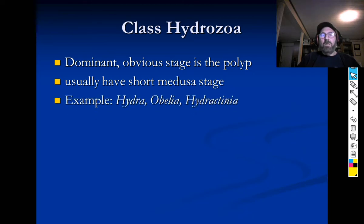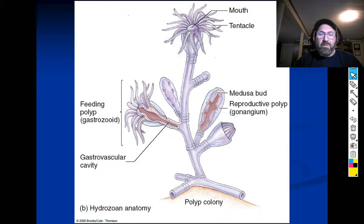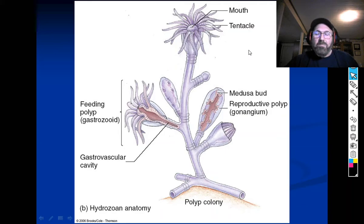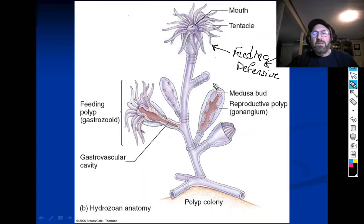What most of us think of as hydrozoans — Hydra and Obelia — are the polyp stage. Hydra is a freshwater critter; Obelia and Hydractinia are marine. Here's a drawing of Obelia — you'll notice they have specialized polyps and they're colonial. This one here is a feeding and defensive polyp — it has the stinging cells.